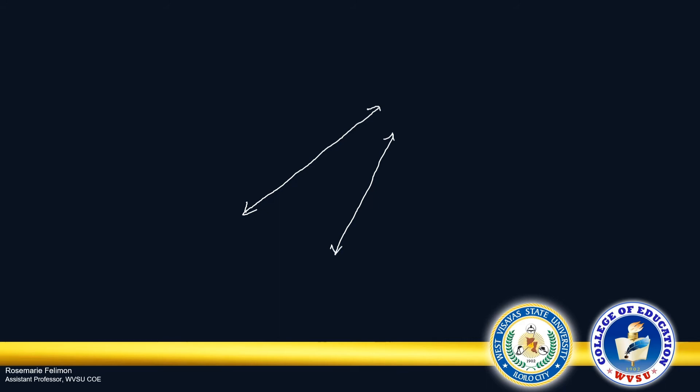Remember that a transversal is simply a line that intersects two other lines at two different points. The two lines may not necessarily be parallel.